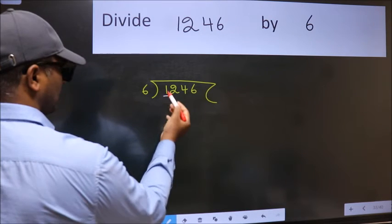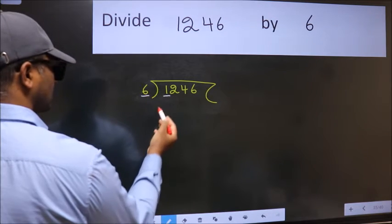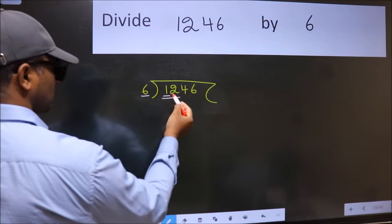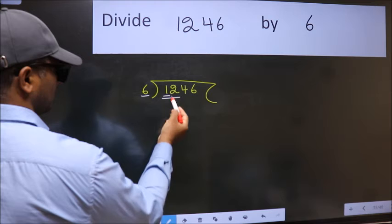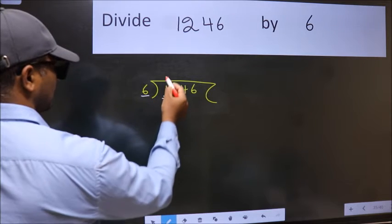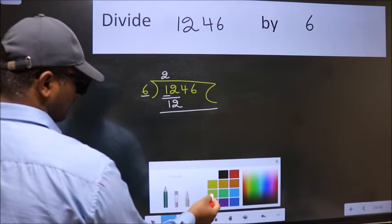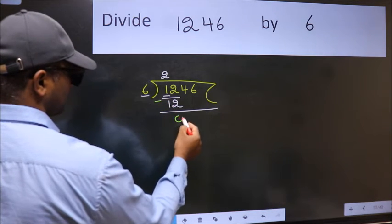Here we have 1 and here 6. 1 is smaller than 6. So we should take 2 numbers, 12. When do we get 12 in 6 table? 6 twos, 12. Now we should subtract. We get 0.